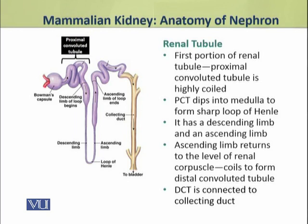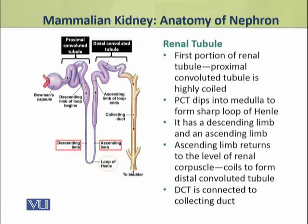It dips into the medulla and forms a sharp loop of Henle. The loop of Henle has a descending limb and an ascending limb. The ascending limb returns to the level of the renal corpuscle and coils to form the distal convoluted tubule, which is connected to a collecting duct.